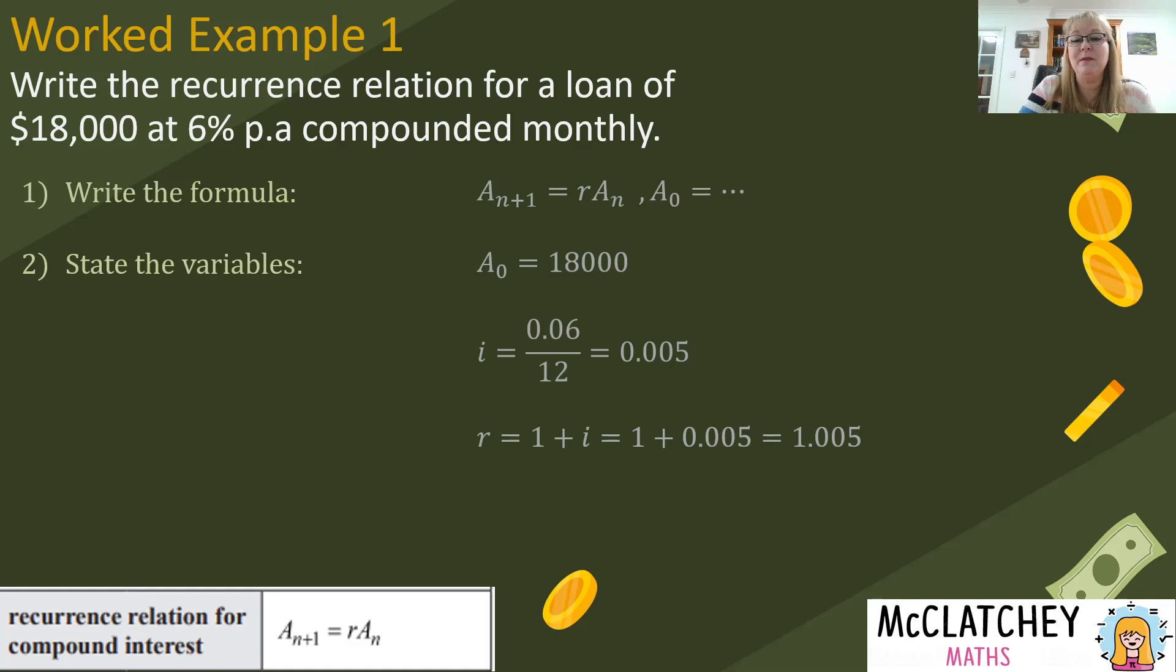Okay so now we've got our variables let's substitute it into the recurrence relation. So now we've got a at time n plus 1 is equal to 1.005 multiplied by a subscript n. Now you don't have to substitute anything into a subscript n+1 or a subscript n when you're writing a recurrence relation because you've got the value of a subscript 0 there telling you that it starts at 18,000.